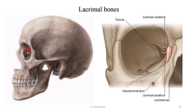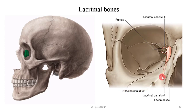Here we have the lacrimal bones. The lacrimal bones are the smallest and most fragile bones of the face. As you can see, they are located in the medial wall of the orbit. The lacrimal bones contain the foramen of the nasolacrimal ducts, also known as tear ducts.